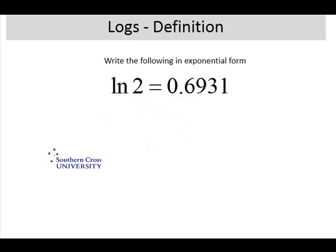The next one, the natural log of 2 is equal to 0.6931. Remember natural log means log base e, and then we can rewrite this in exponential form as 2 is equal to e to the 0.6931.